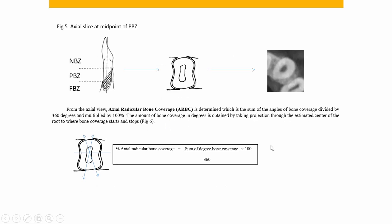Then we take the midpoint of the partial bone zone, take a slice through exactly the midpoint perpendicular to the long axis of the tooth, and measure the degrees of defect — the amount of the root circumference at that slice that's missing bone. You draw an angle from the defect edges to the center of the tooth, which gives you the degrees of defect. You subtract the degrees of defect from 360, divide by 360, and multiply by 100 percent, giving you the percentage of that root covered with bone at that particular slice.